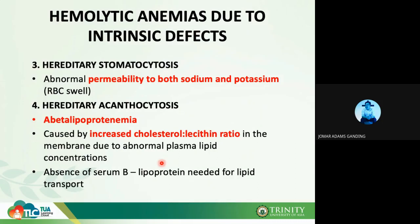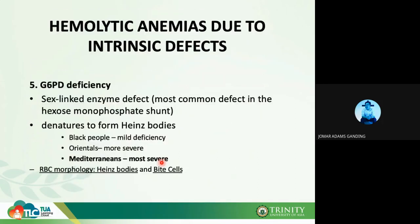Now we move to intrinsic factors related to enzymopathies. The first is glucose-6-phosphate dehydrogenase (G6PD) deficiency — a sex-linked enzyme defect and the most common defect in the hexose monophosphate shunt. G6PD is a very important enzyme in the hexose monophosphate shunt, which prevents oxidation of your hemoglobin by free radicals such as peroxides, thereby preventing denaturation of hemoglobin and formation of Heinz bodies.